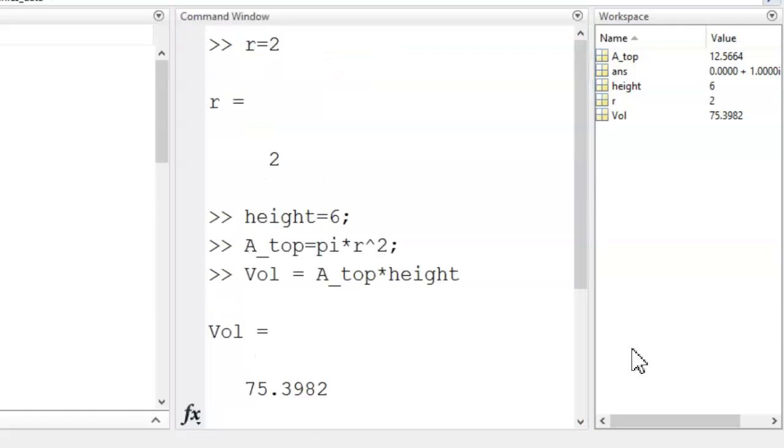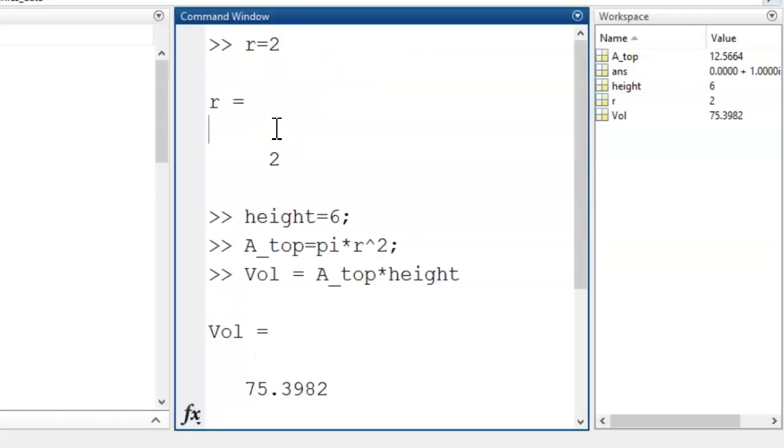Two results were echoed to the command window, r and Vol. Two results were suppressed, height and A_top. How do you suppress an output? Use a semicolon.